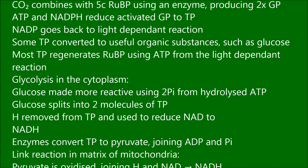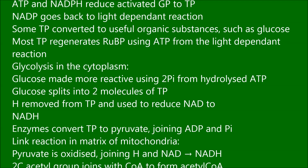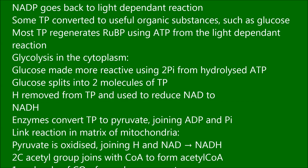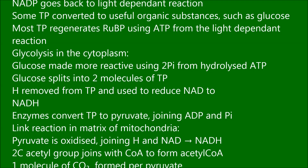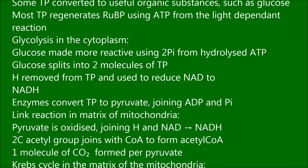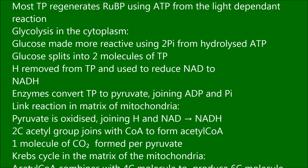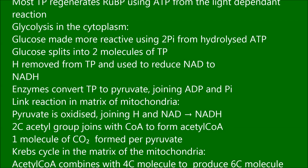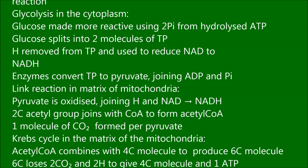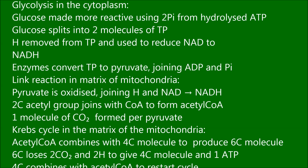Glycolysis in the cytoplasm: glucose is made more reactive using 2 phosphates from hydrolyzed ATP. Glucose splits into 2 molecules of TP; H is removed from TP and used to reduce NAD to NADH. Enzymes convert TP to pyruvate, joining ADP and phosphate.